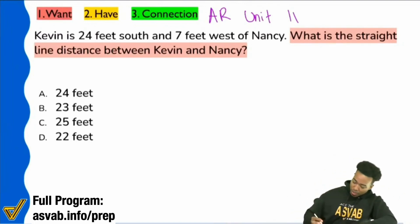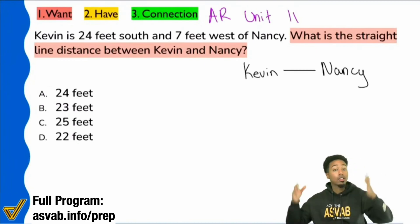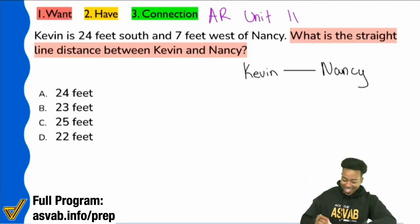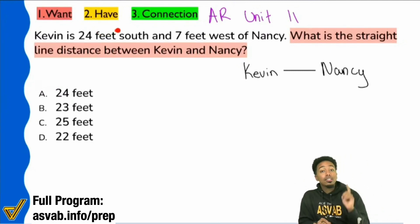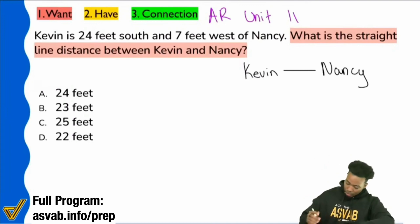But here we go. If we have Kevin and Nancy, we're just saying if we have Kevin and we have Nancy, I just want to know how far apart they are from Kevin to Nancy. That's all I want to know. Let's figure this out. So let's see what it says. It says Kevin is 24 feet south and seven feet west of Nancy. So let's go ahead and do our thing here. And what I mean by that is remembering our bearings. What's north? What's south? What's east? What's west?